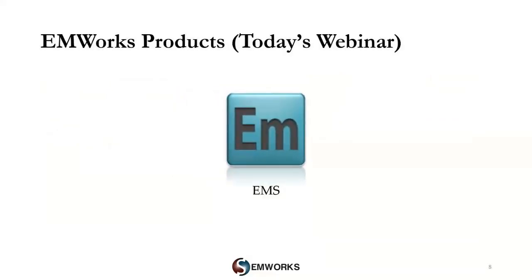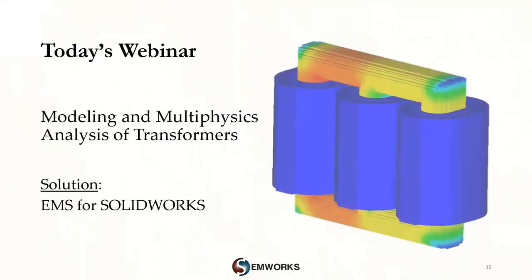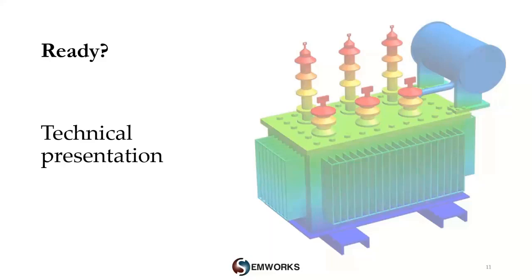In today's webinar, Mahmood will utilize the EMS product to model and analyze a transformer application. Let us briefly touch upon the licensing structure offered by EMWorks. We offer three different programs: commercial, academic, and startup. Each program has its own benefits and requirements. Within the commercial program, we offer perpetual licenses, while in the other two programs, licensing is usually annual based. The topic for today's presentation is modeling and multiphysics analysis of transformers, including transformer wizard, AC harmonic and transient analysis, and multiphysics analysis including thermal and linear statics.